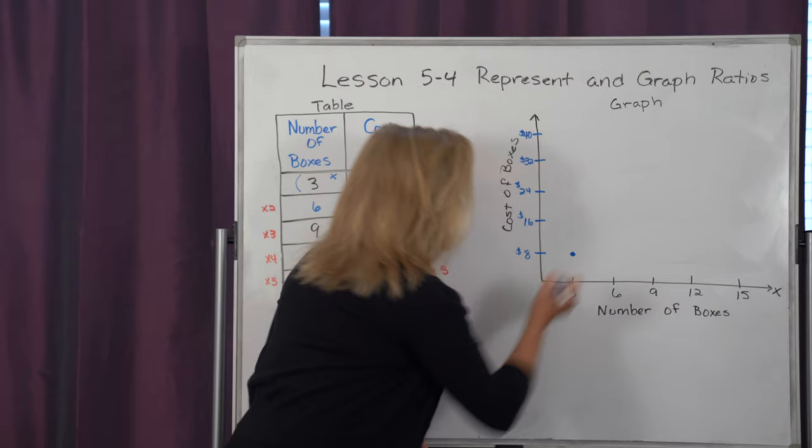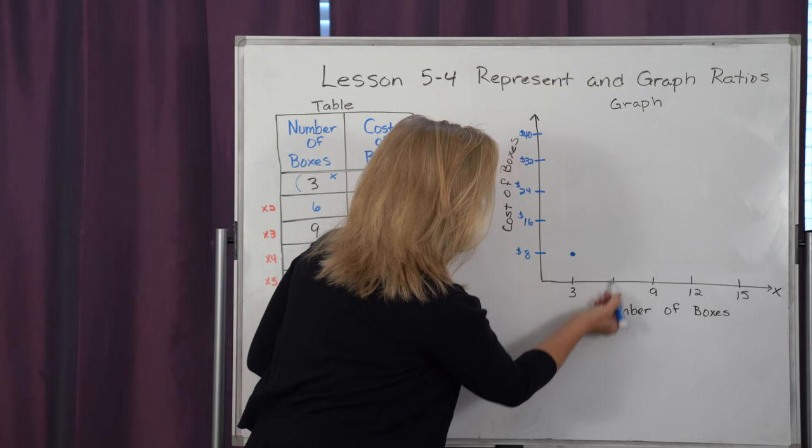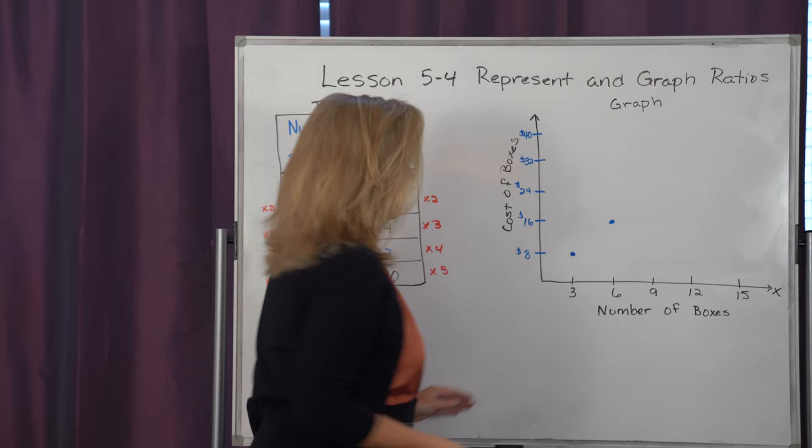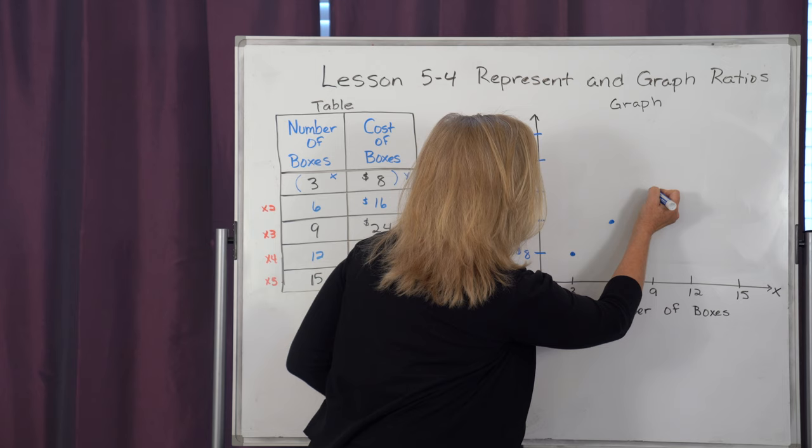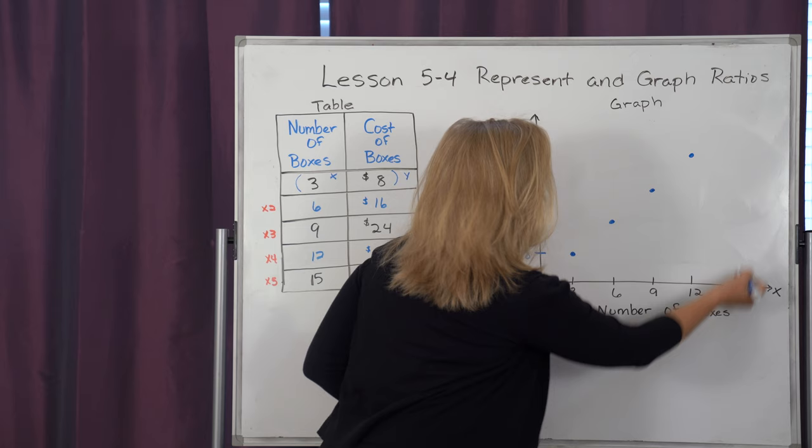And then I'm going to take my second, which is 6 and 16. I find 6 here on my x, I go up to 16 and put a point. I find my third, which is 9 and 24, and I'm going to plot that. I get 12 and 32, and I plot that. And I have 15 and 40, and I plot that.